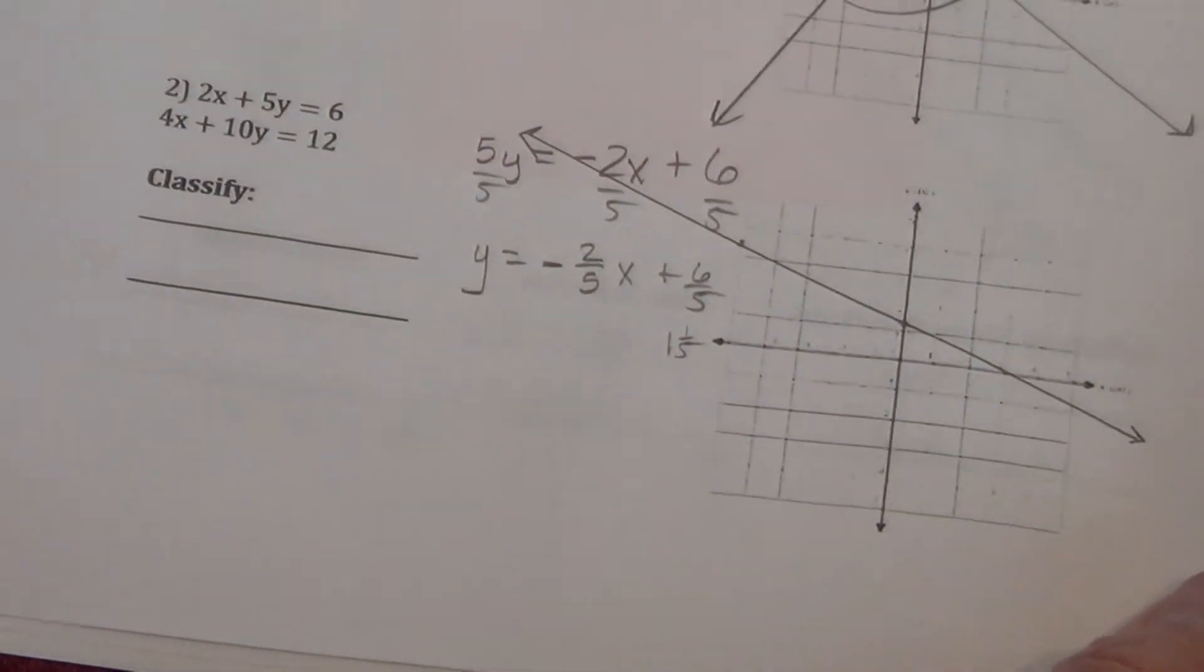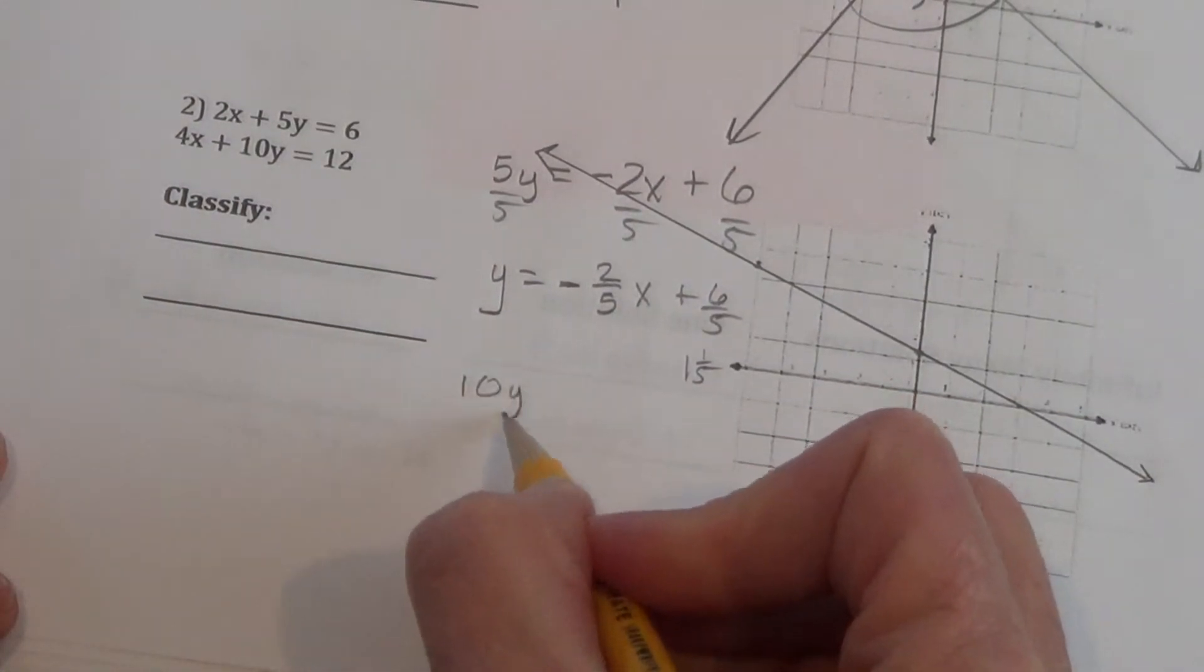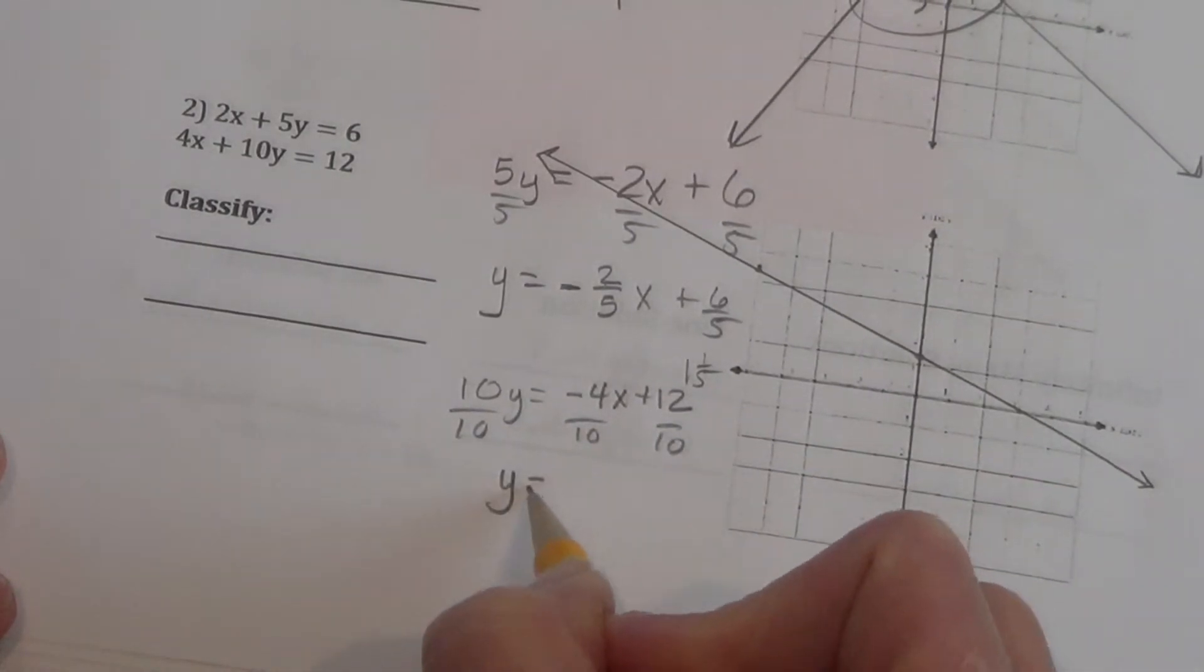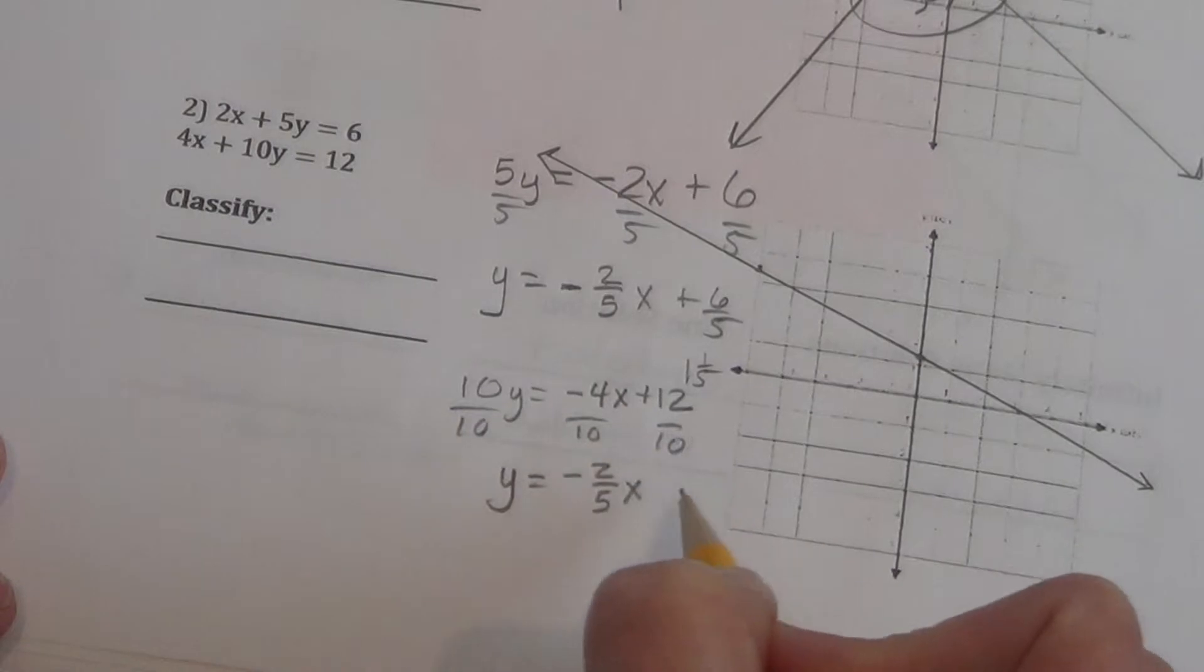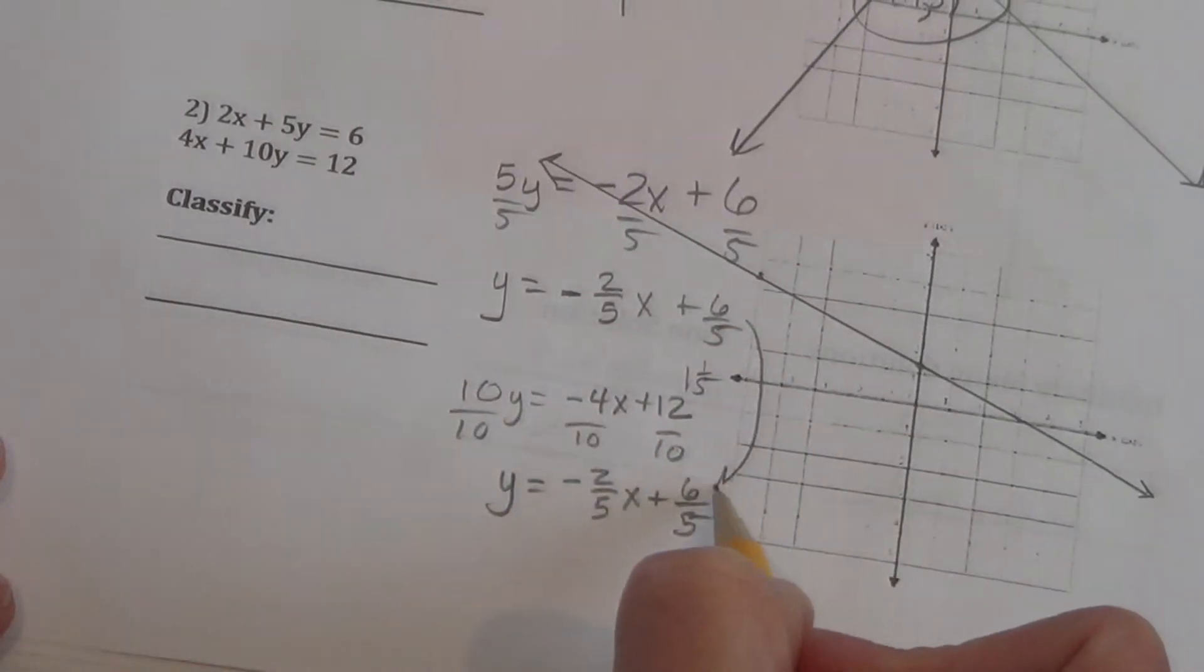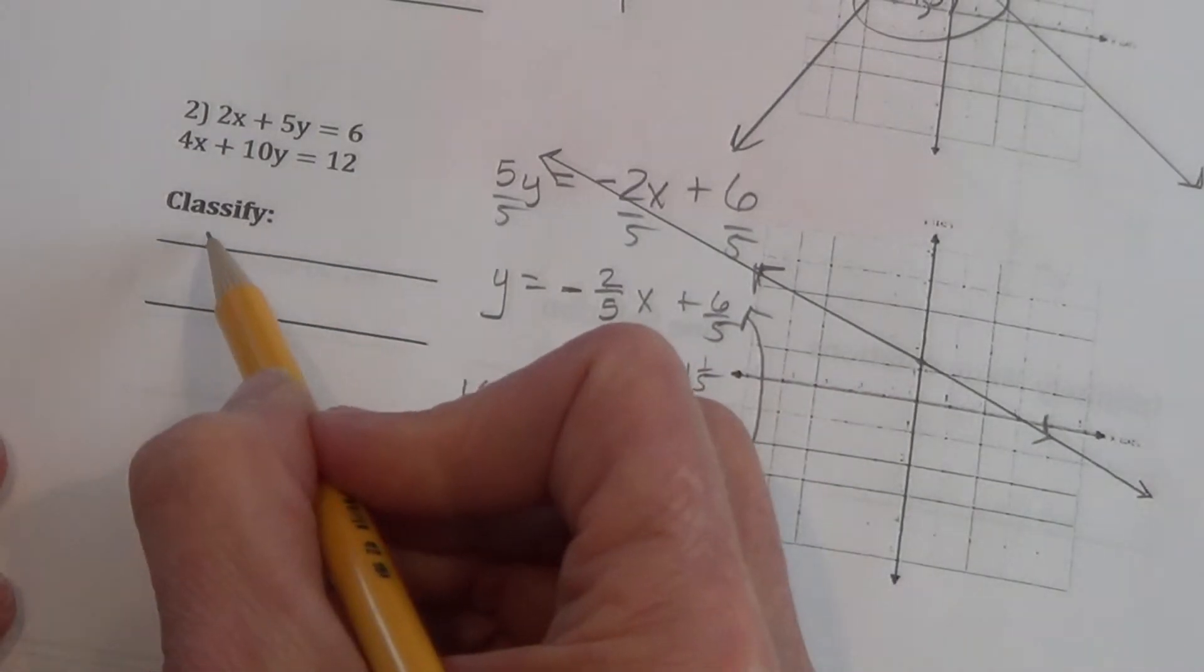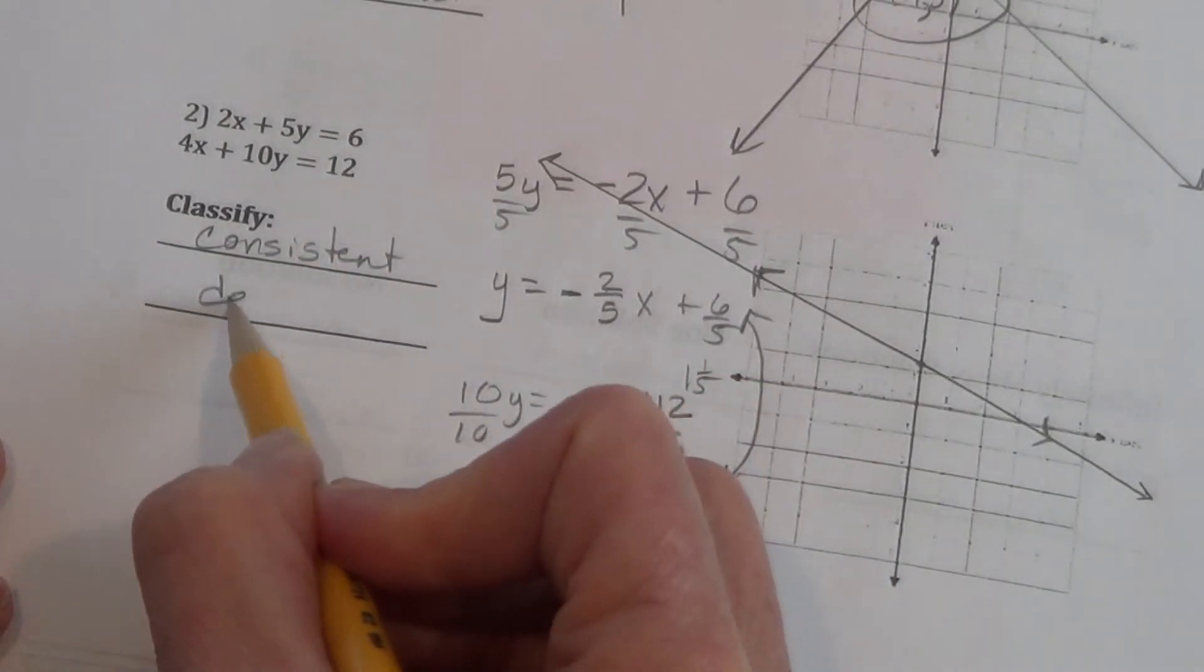Next graph, we need to manipulate it as well. So, we subtract 4x from each side, and we get 10y equals negative 4x plus 12. Now, we divide by 10. We get y alone, finally. Negative 4 tenths can reduce to negative 2 fifths x. 12 tenths can reduce to 6 fifths. And, if you notice, we have an identical equation to that one. So, these are the same line. Just add the arrowheads. And, over here, we say that this is consistent, because there is a solution. But, now, this time, it's dependent.